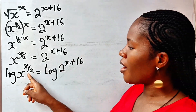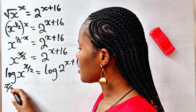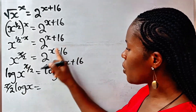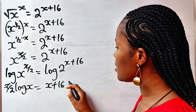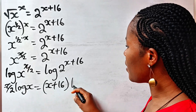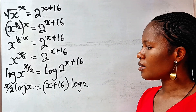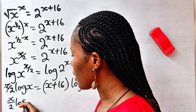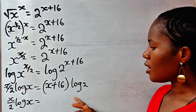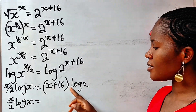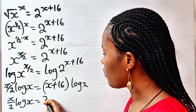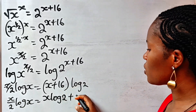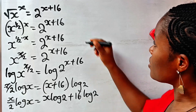Therefore we now write this as x over 2 times log x, is equal to x plus 16 multiplied by log 2. Now we have x over 2 log x is equal to — let's open the brackets — x times log 2 gives us x log 2, plus 16 times log 2 gives us 16 log 2.